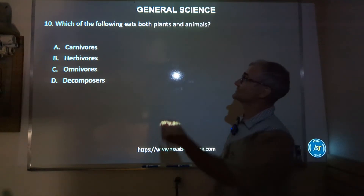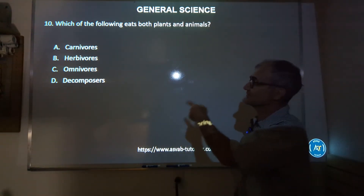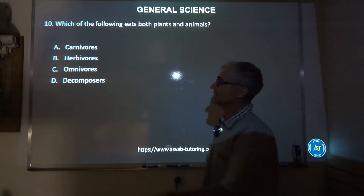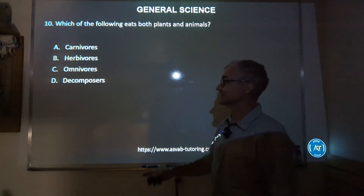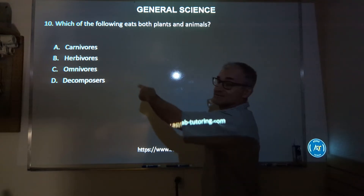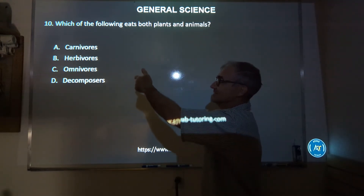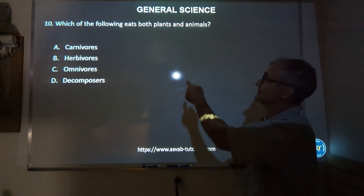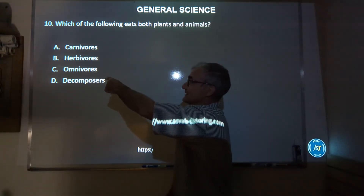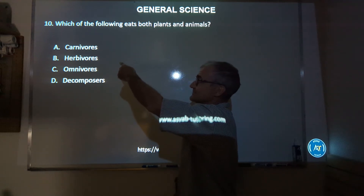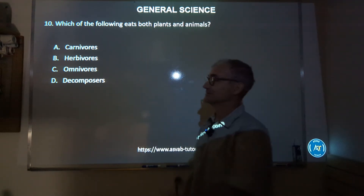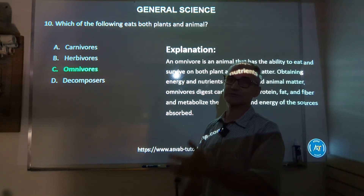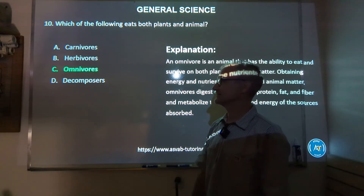Number 10: which of the following eats both plants and animals? Carnivores, herbivores, omnivores, or decomposers? The top three all have the same ending, so I know they have similarities — I can eliminate D. Herbs are plants, carne is meat, omni is all. So the correct answer is C, omnivores. If you understand the roots of words a little bit, you can do a lot better on these style of tests.